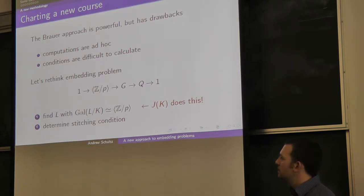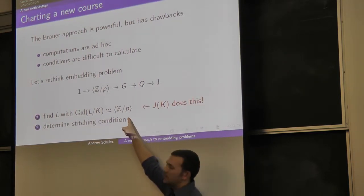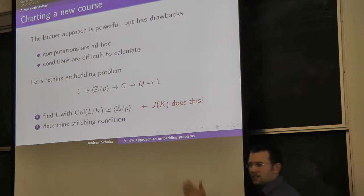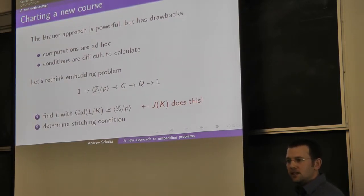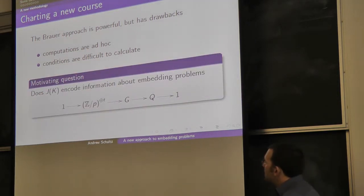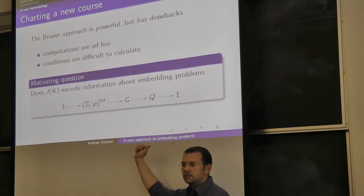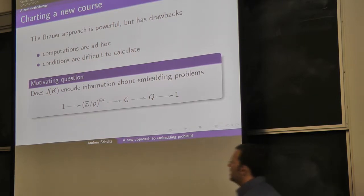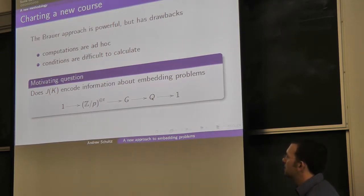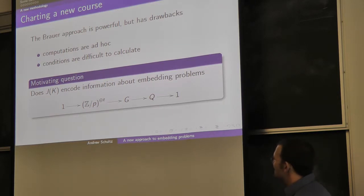What does the stitching condition mean here? J of K doesn't just parametrize things that look like Z mod P extensions — it parametrizes things that look like elementary P-abelian extensions, direct sums of Z mod P's. So I'd like to ask whether J of K encodes information about this larger class of embedding problems, not just kernel being Z mod P but being a general elementary P-abelian extension. The answer will turn out to be yes — otherwise the talk would finish now.